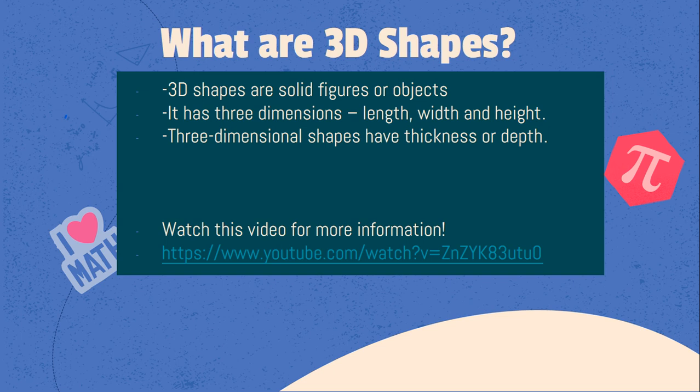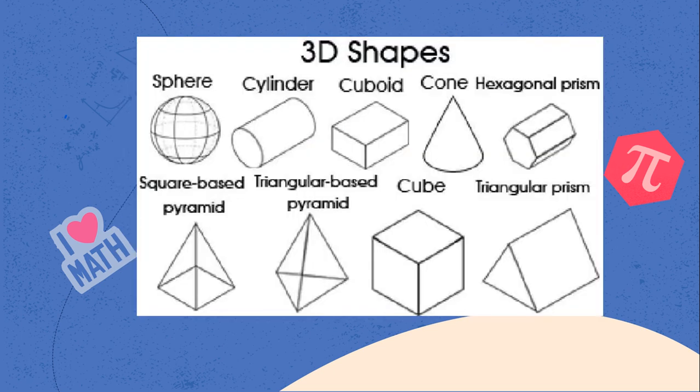And three-dimensional shapes have thickness or depth, so you can tell that they are 3D because there's more than one side to them. And again, if you want a little bit more information, there's a video there from last week if you want to watch it.